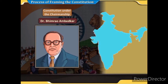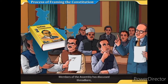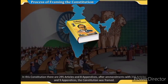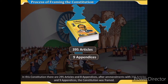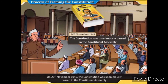A drafting committee was appointed to draft the Constitution under the chairmanship of Dr. Bhim Rao Ambedkar. The Constituent Assembly met for 166 sessions spread over two years, 11 months, and 17 days. Members discussed threadbare each and every detail, considering the constitutions of different countries. Originally containing 295 articles and eight appendices, after amendments the Constitution has 395 articles and nine appendices.